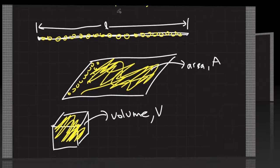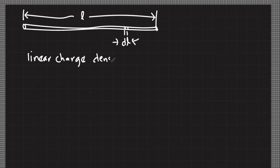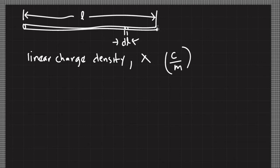To facilitate the calculation of electric field, we define the following terms. Consider a very thin wire of length L. If we consider an infinitesimal length d sub l, that is a very small portion of the wire. For line charges, we define the concept of linear charge density, symbolized by small lambda, which refers to charge per unit length with SI units of coulombs per meter. If the entire wire has a charge Q, then linear charge density equals Q over L. For an infinitesimal portion, it equals dQ over dL.